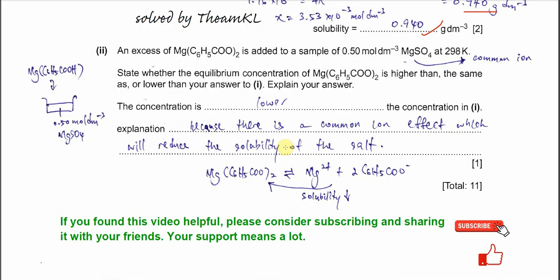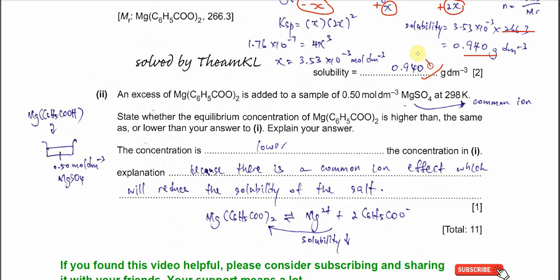Part 2, the last part. An excess of this salt is added to 0.5 mol per dm^3 magnesium sulfate. State whether the equilibrium concentration of magnesium benzoate is higher than, the same, or lower than your answer in part 1. Explain your answer. This one is quite easy.